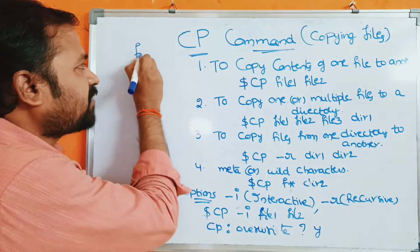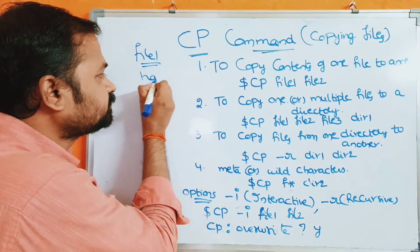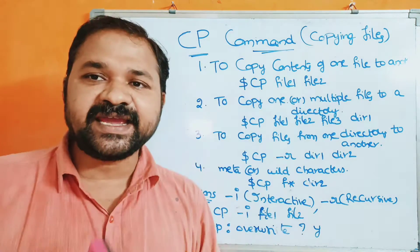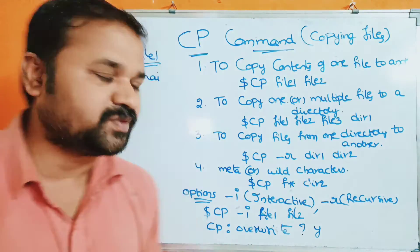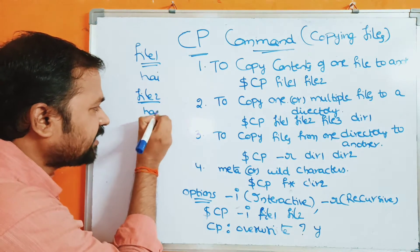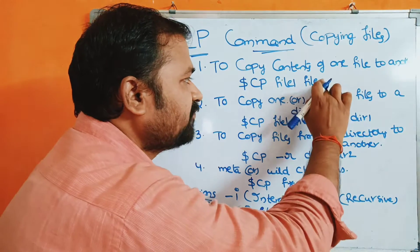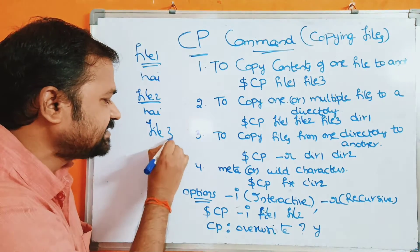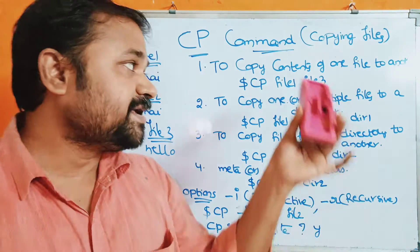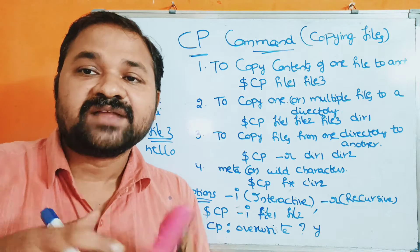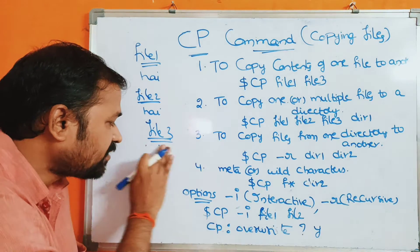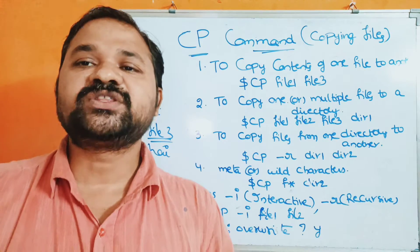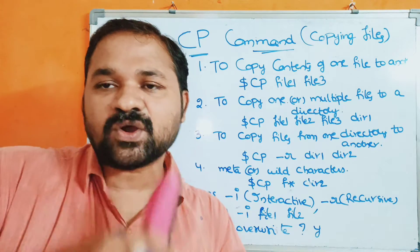For example, assume file1 has the content 'hi'. If file2 is a new file, then file2 will be created and the contents of file1 will be copied to it — so file2 will contain 'hi'. Now assume file3 is an already existing file with content 'hello'. Since file3 already exists, its contents will be overwritten with file1's content. So now file3 contains 'hi'. This is the first advantage of the cp command — we can copy the contents of one file to another file.